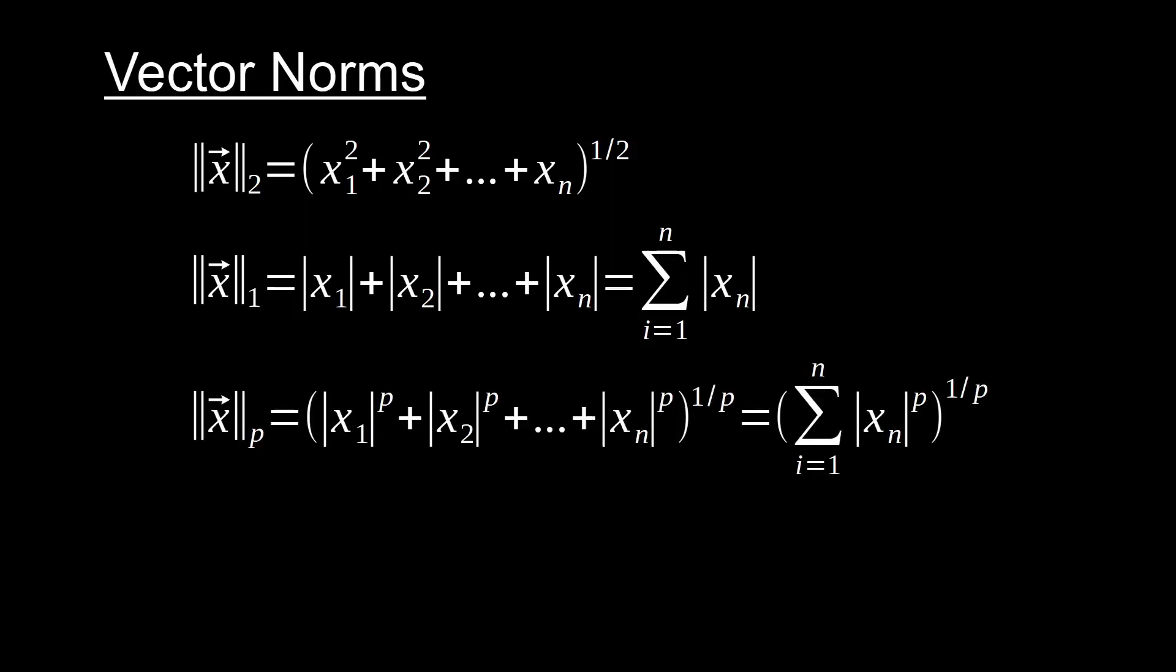But really you could have any vector norm of order p using this formula right here. This is what we call the p norm formula or just the p norm where you could have a 3 norm or 4 norm or 5 norm following this formula. You're just going to take the absolute value of each one of the components, raise each component to the pth power, and then take the pth root of the sum of all of those quantities.